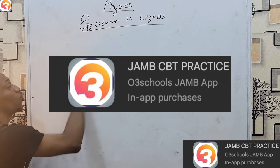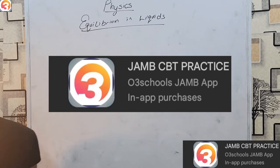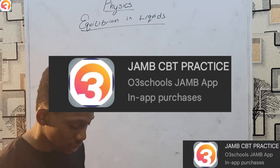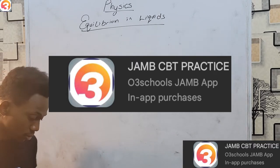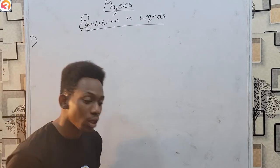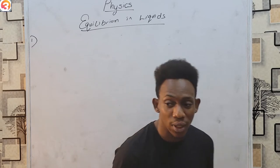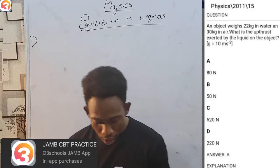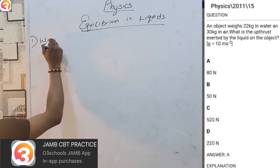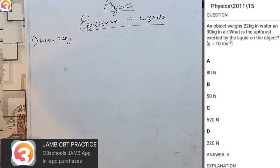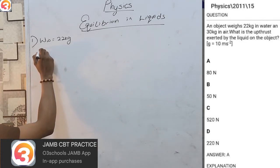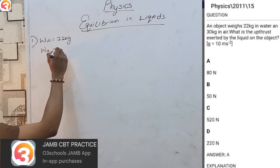Our first question comes from 2011, question 15. We are told an object weighs 22 kg in water and 30 kg in air. Now, these are given in kg, but weight must be in newtons, so we multiply by g = 10. Weight in water becomes 220 N and weight in air becomes 300 N.